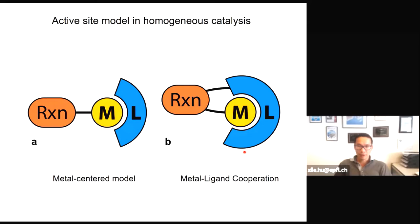In homogeneous catalysis, people understand a lot more about active sites. These are typically single-site catalysts made of metal-ligand complexes. Traditionally it was thought that reactions take place at the metal sites exclusively, and ligands serve to tune the electronic and steric properties of the metal centers.